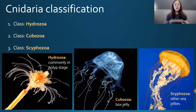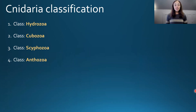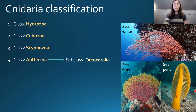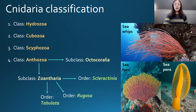The main classes of cnidaria include hydrozoa, which commonly remain in the polyp stage; cubozoa, which include common box jellies; and scyphozoa, which includes many other sea jelly species. These are all soft-bodied. The hard-bodied, more paleontologically applicable cnidaria belong to class anthozoa. Anthozoa includes the subclass octocoralia — sea whips, sea pens, and sea fans — and the subclass zoantharia, which contains the three main coral orders: tabulata, rugosa, and scleractinia.